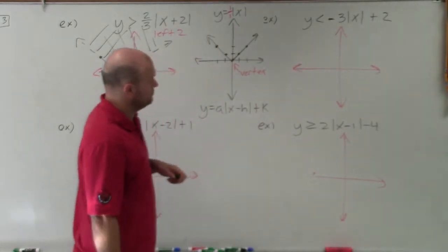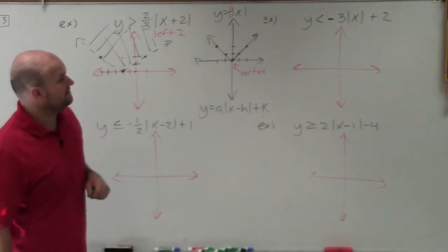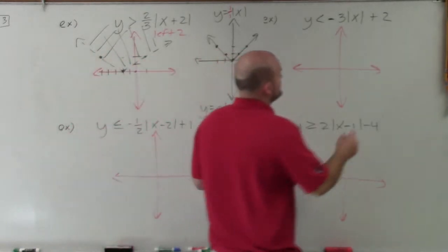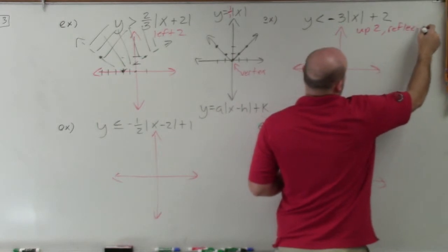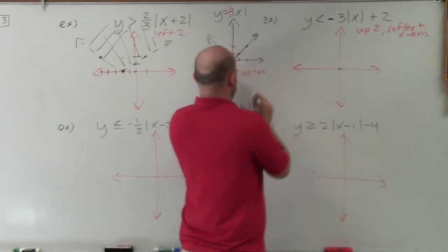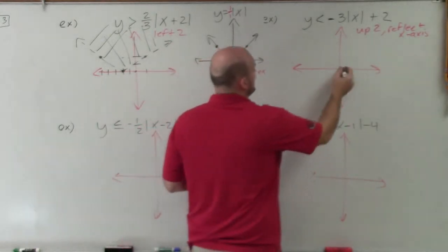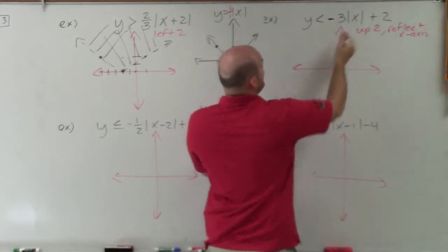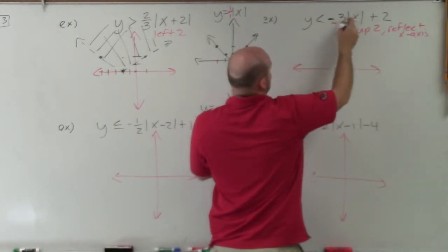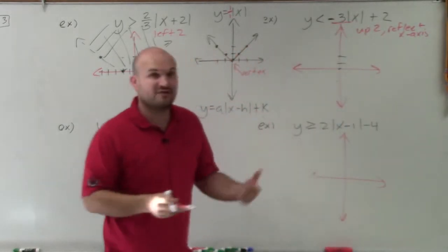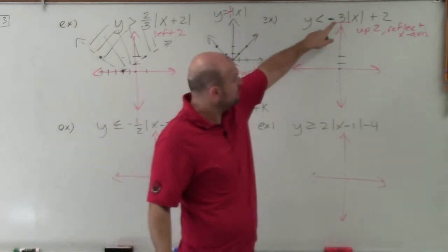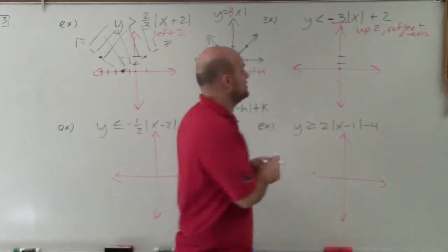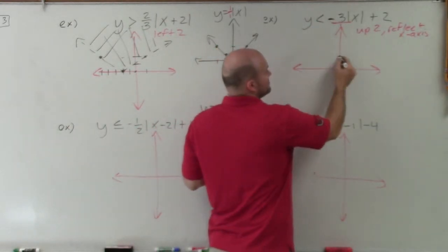Now let's get into the next one. I have y is less than negative 3 times absolute value of x plus 2. First thing I want to do is write in my transformation, so I'm going to up 2 and reflect the x-axis. So my vertex starts at 0, 0 for the parent graph. I'm going to move that up 2.